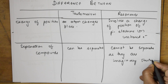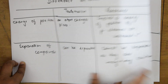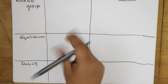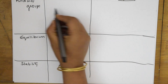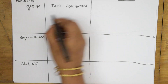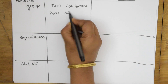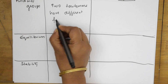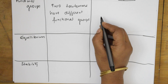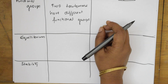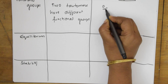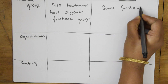The third criteria is functional groups. In tautomerism, the two tautomers have different functional groups — one is the keto form and one is the enol form. But in resonance, all the canonical structures of the resonance hybrid have the same functional group.